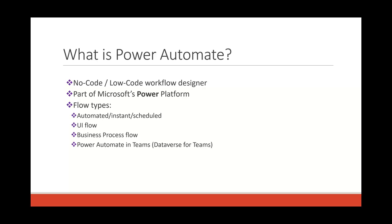There are several kinds of basic flows, which we'll mostly focus on today. Automated flows are started by some kind of trigger — like an email coming in or an item created in a SharePoint list. Instant flows are ones you start yourself, either with a button on the mobile app or by selecting an item in SharePoint. Scheduled flows let you make a flow happen on a recurrence basis.